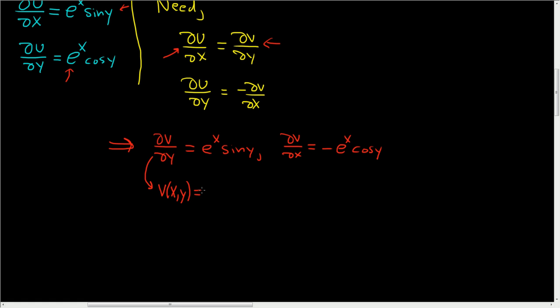Integrating with respect to y, we ignore the e to the x. What's a function whose derivative is sine? Negative cosine. Since we integrated with respect to y, we add an unknown function of x, little g of x.